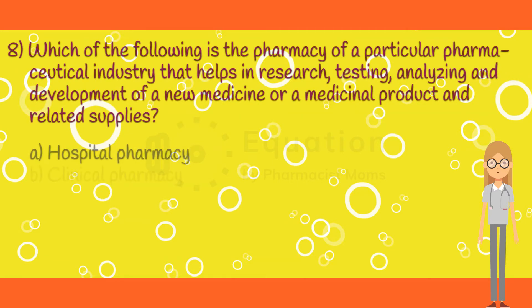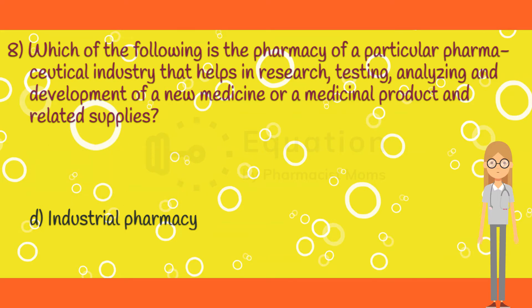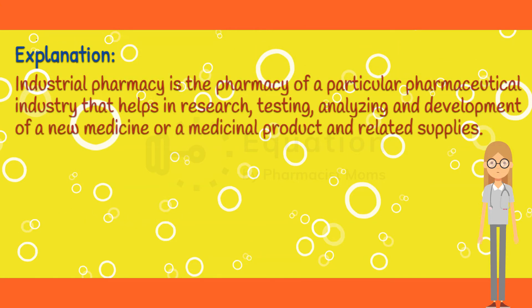Question 8. Which of the following is the pharmacy of a particular pharmaceutical industry that helps in research, testing, analyzing, and development of a new medicine or a medicinal product and related supplies? Option A: Hospital pharmacy. Option B: Clinical pharmacy. Option C: Regulatory pharmacy. Option D: Industrial pharmacy. The correct answer is option D. Industrial pharmacy is the pharmacy of a particular pharmaceutical industry that helps in research, testing, analyzing, and development of a new medicine or a medicinal product and related supplies.